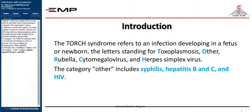Pregnant women are at higher risk of severe infection and death from certain pathogens. In addition to rubella and syphilis, for which pregnant women are routinely screened, the following infections during pregnancy place the mother and the infant at high risk for potential morbidity and mortality.